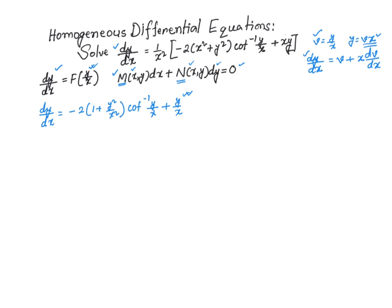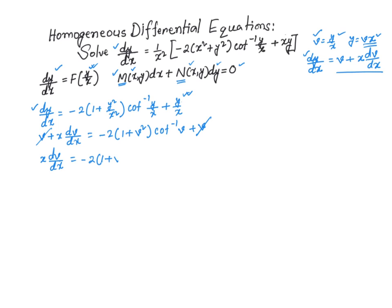Substituting these values in: v + x·dv/dx equals negative 2 times (1 + v²) times cotangent inverse of v, plus v. The v terms cancel on both sides, giving x·dv/dx equals negative 2 times (1 + v²) times cotangent inverse of v.